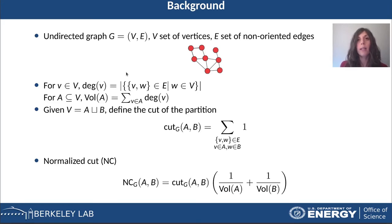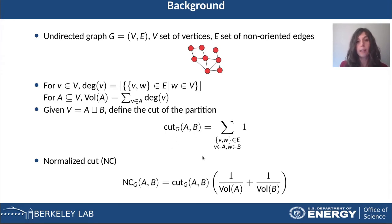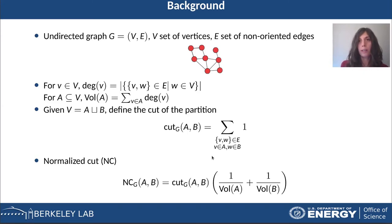For a subset of vertices, its volume is defined as the sum of the degrees of these vertices. If we have a partition of the set of vertices of the graph, we can define its cut as the number of edges that connect the two partitions — exactly the number of edges between red and blue vertices. Notice that this definition doesn't take into account the size of the two partitions; it just considers the number of edges connecting them.